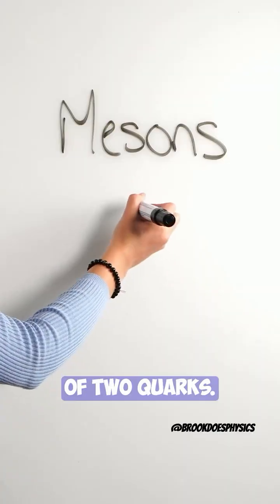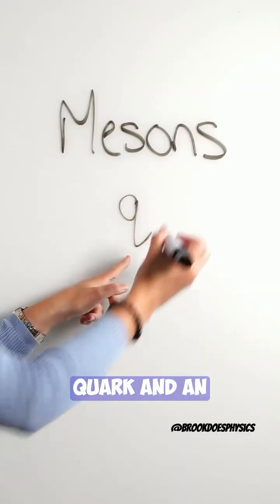So mesons are made of quarks. They're always made of two quarks. They're always made of a real quark and an anti-quark.